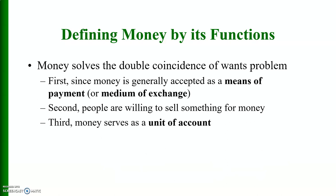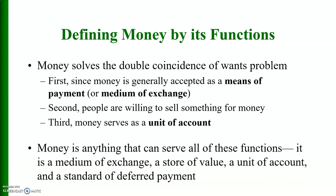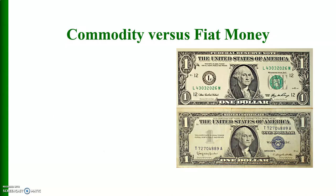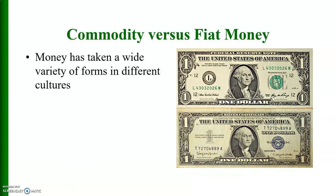Defining money by its functions: money plays many different functions. It solves the double coincidence of wants problem, since money is generally accepted as a medium of exchange. Second, money serves as a unit of account. Finally, it also serves as a standard of deferred payments — that is, payments to be made in the future. Money has taken a wide variety of forms in different cultures.